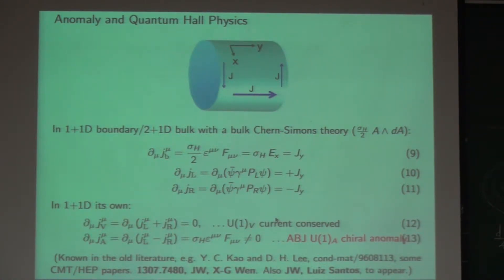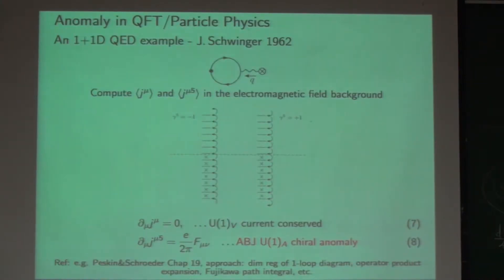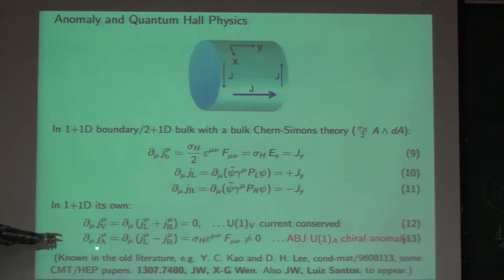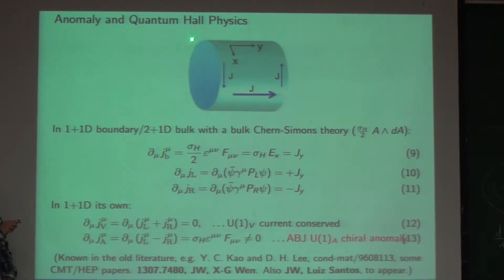This is exactly related to a complete one-loop calculation in particle physics. You can explain to your field theory friends how this complicated loop calculation can be understood from high school physics. The quantum anomaly means the axial current — J_L minus J_R — is not conserved, and it is related to quantum loop corrections.